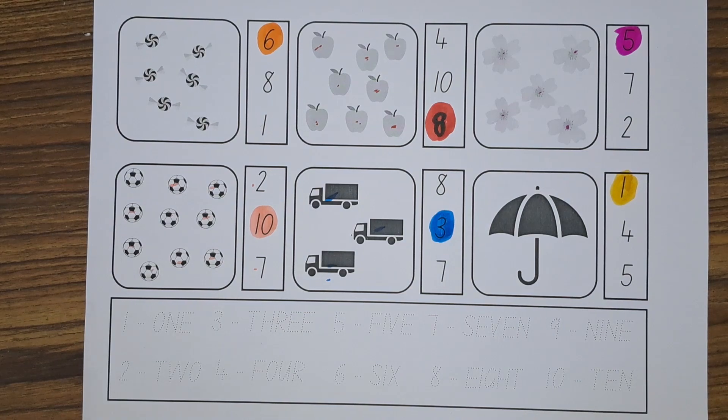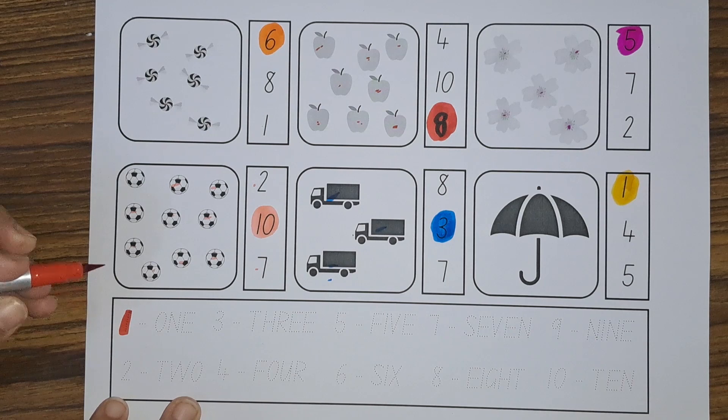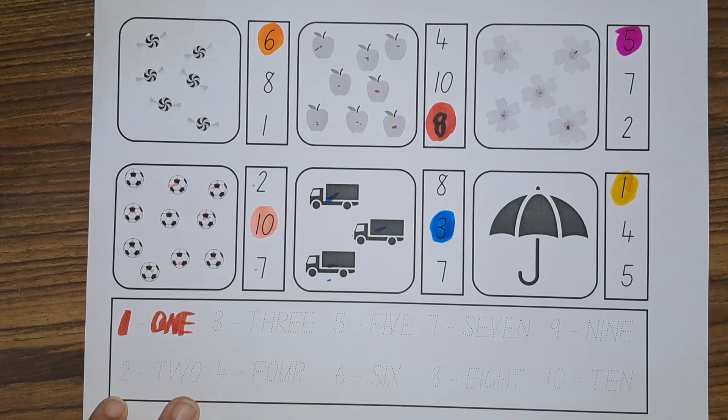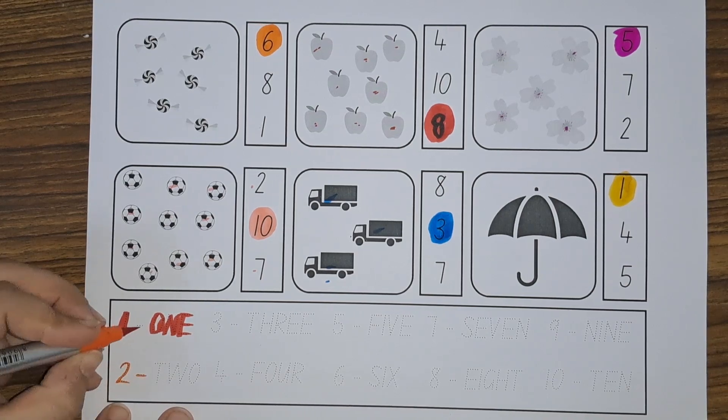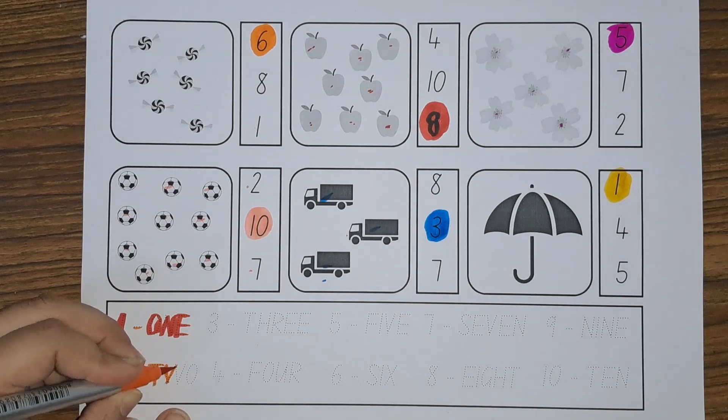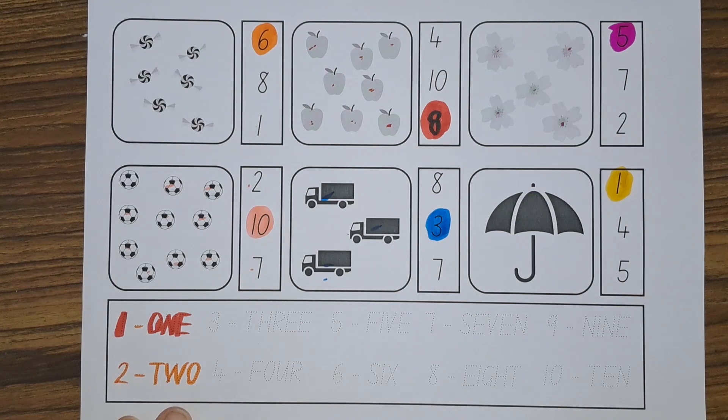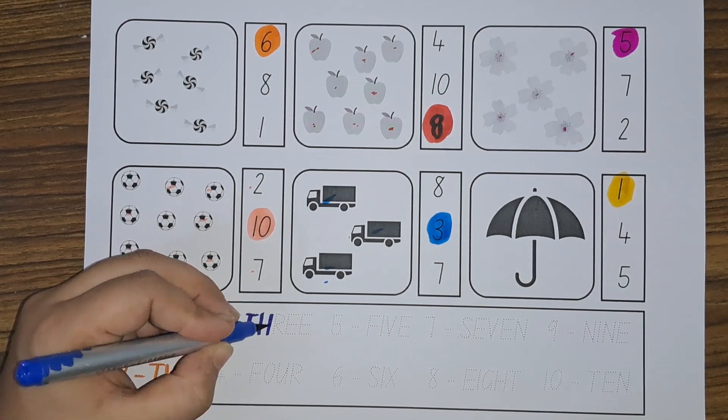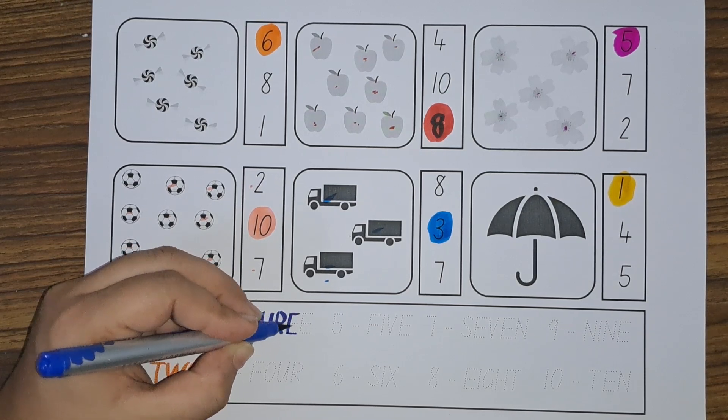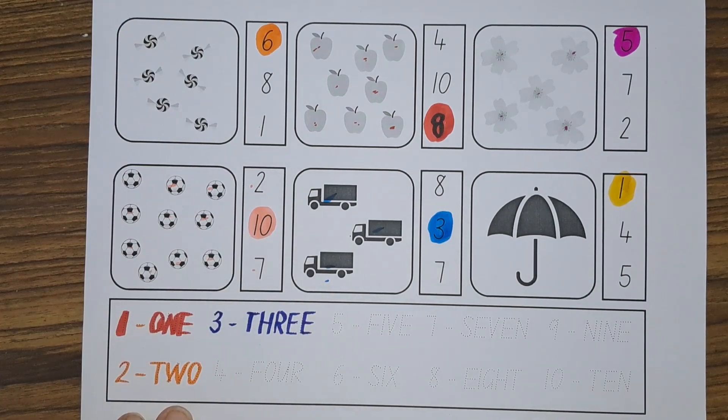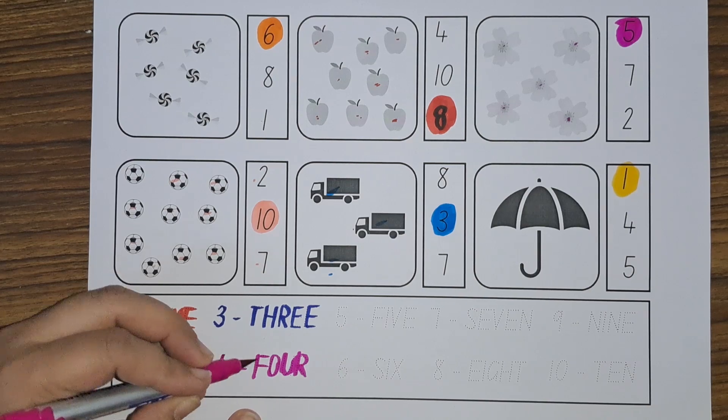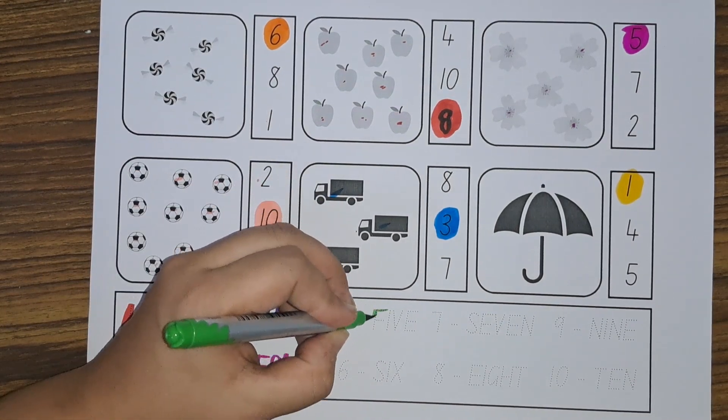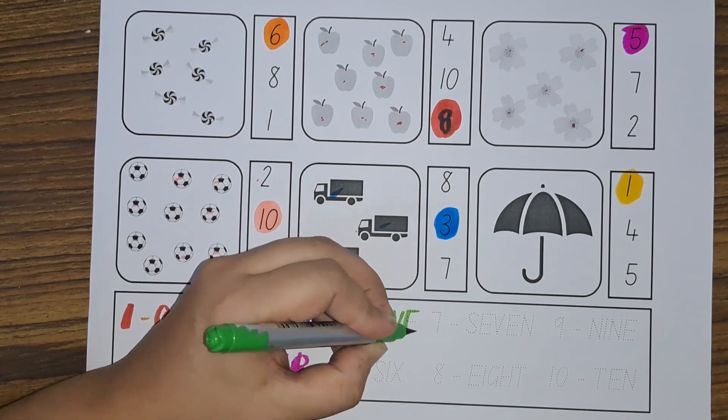Now let us write the number names. One: O-N-E. Two: T-W-O. Three: T-H-R-E-E. Four: F-O-U-R. Five: F-I-V-E.